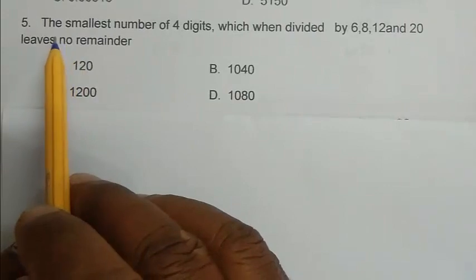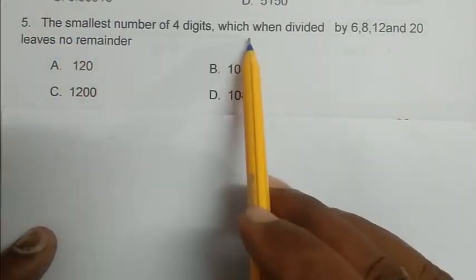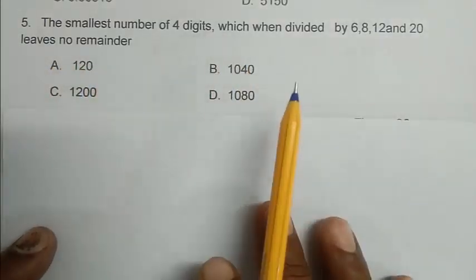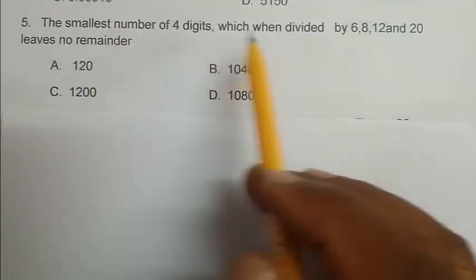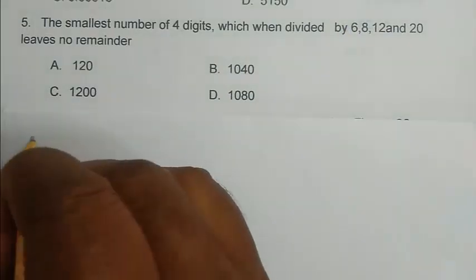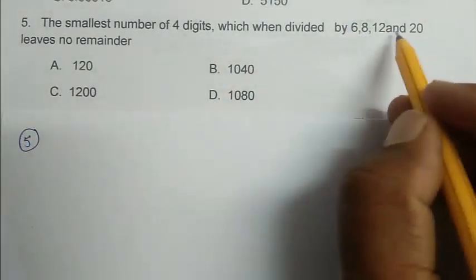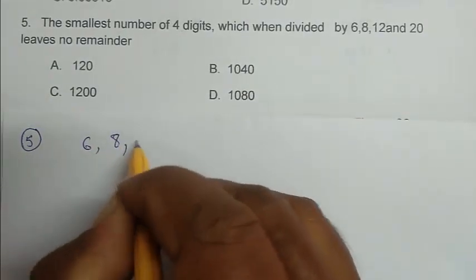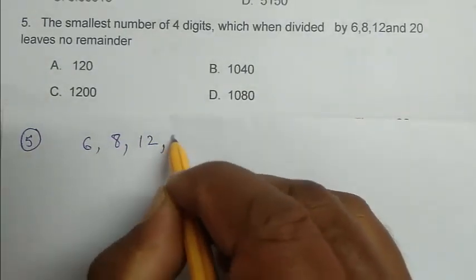Question number 5. The smallest number of 4 digits which when divided by 6, 8, 12 and 20 leaves no remainder. So we can solve this type of math like that. First we calculate LCM of this 4 number. 6, 8, 12, 20.